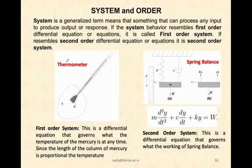I will give an example for a first order system. This is a thermometer. We know that there is mercury in a tube. When you keep the thermometer subjected to temperature or press on that bulb, the mercury will expand and rise through this tube. This is a differential equation that governs the temperature of mercury at a time. The length of the column of the mercury is proportional to the temperature. The differential equation that defines the rise of mercury with reference to change in time can be defined with a single order differential equation. So this is a first order system.